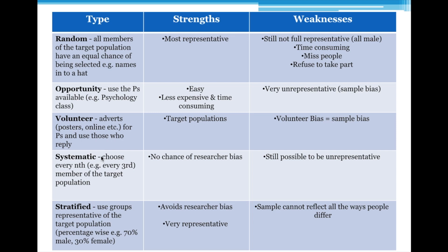With systematic sampling, you get the list of everyone and choose every nth person. The best thing is there's no researcher bias. With opportunity sampling, you're probably not going to approach someone who looks intimidating in the street — you'll go to the nicely dressed, smart person instead, introducing researcher bias. With systematic sampling, participants are selected via a different method, avoiding this. However, it could just be that every nth person happens to be a certain gender or socioeconomic background, affecting your results.